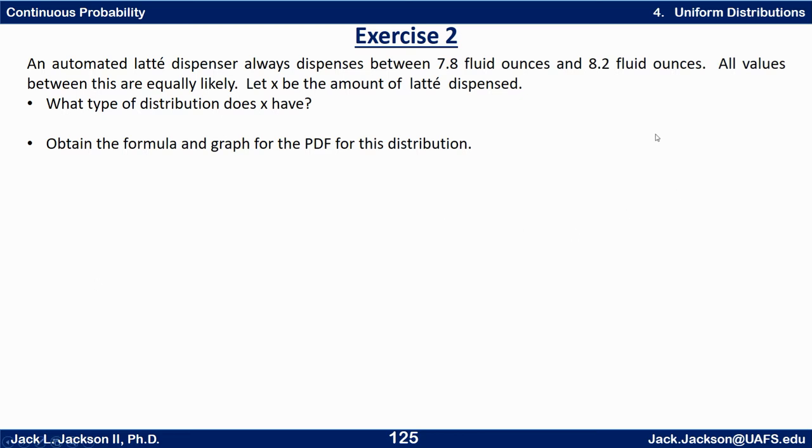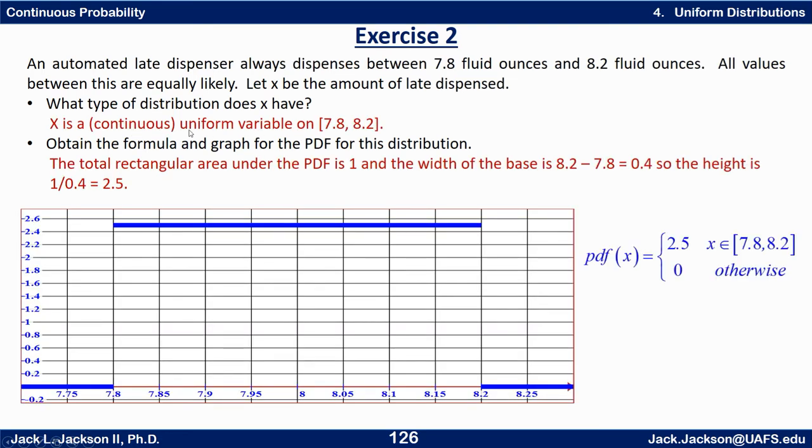Well it says right here all values between these two numbers are equally likely. So that is a uniform distribution. Outside of that it's 0. So it's uniform from 7.8 to 8.2. So we would call that a uniform variable on 7.8 to 8.2 or just a uniform 7.8 to 8.2. And the graph looks like this. To the left of 7.8 the height is 0. To the right of 8.2 the height is 0. In between we have some height here so that we make a little rectangle. And this is a horizontal constant function in between.